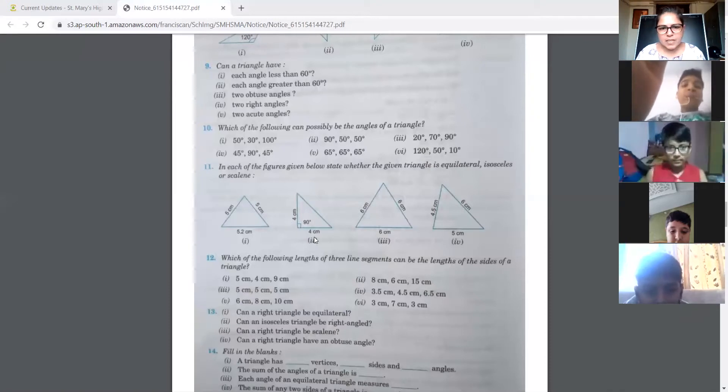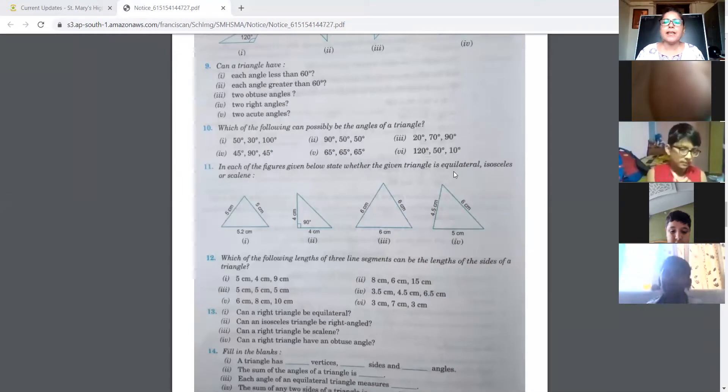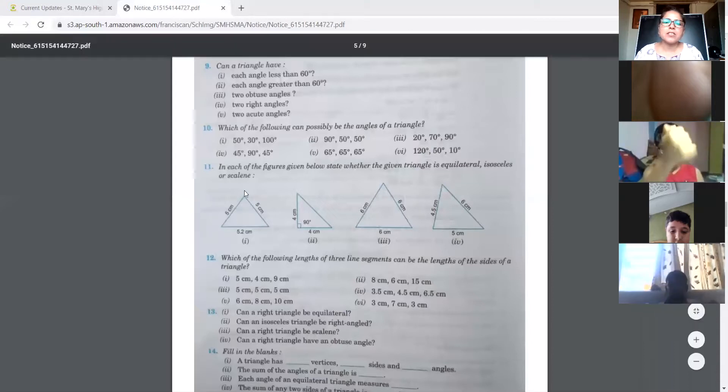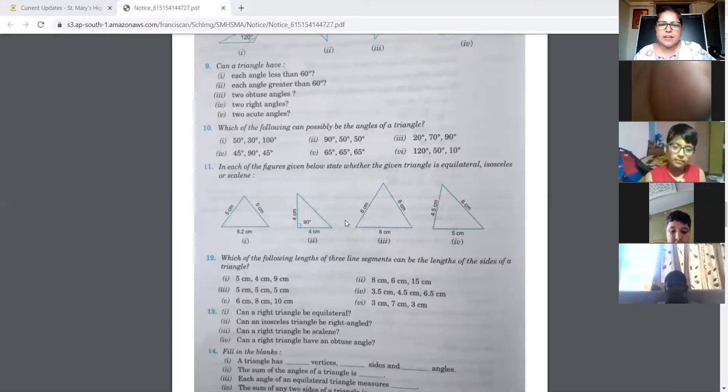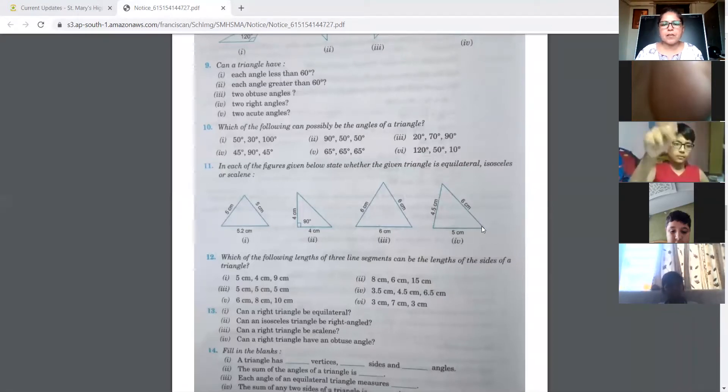In this again, two sides are the same so it is isosceles. Here all three are the same, so equilateral. Here all three sides are of a different measure, so it is a scalene triangle. You have to just identify the type of the triangle and write the name.